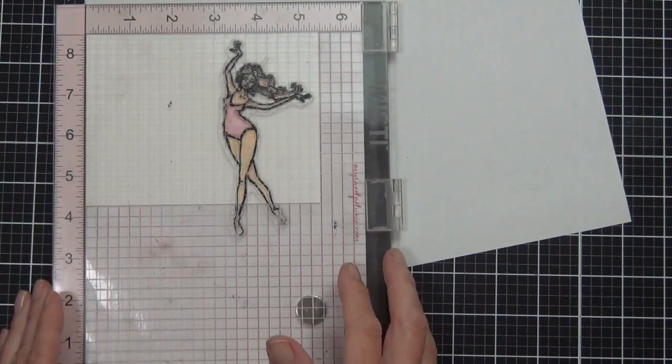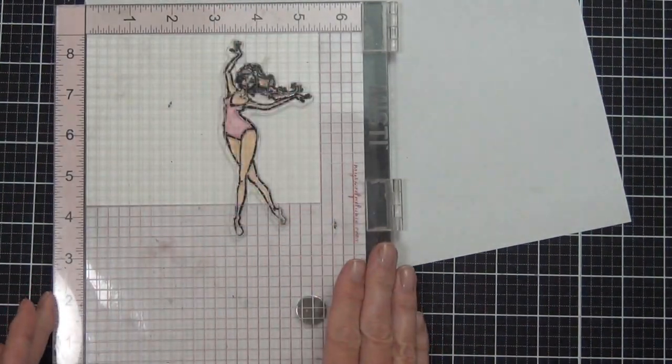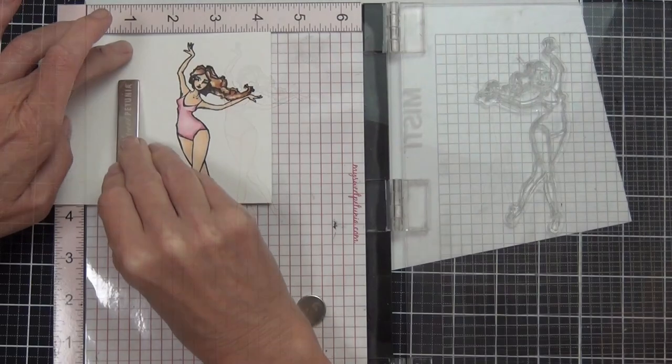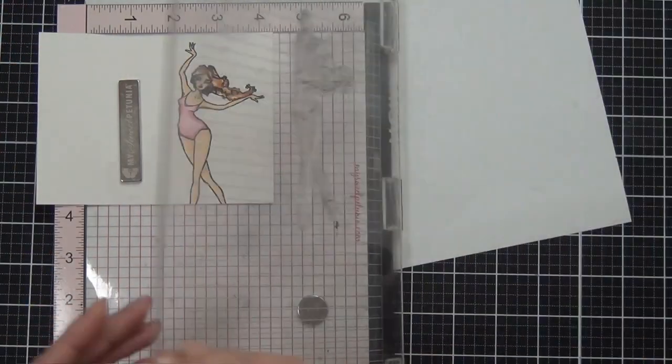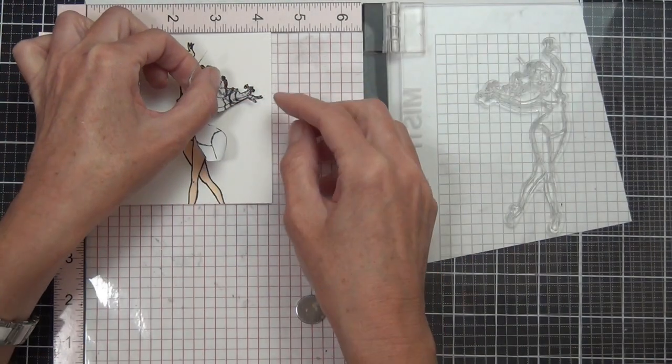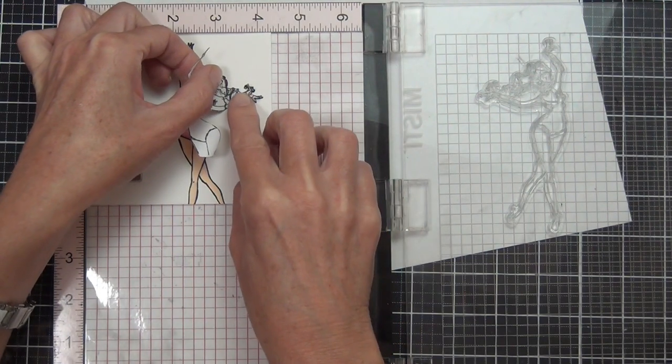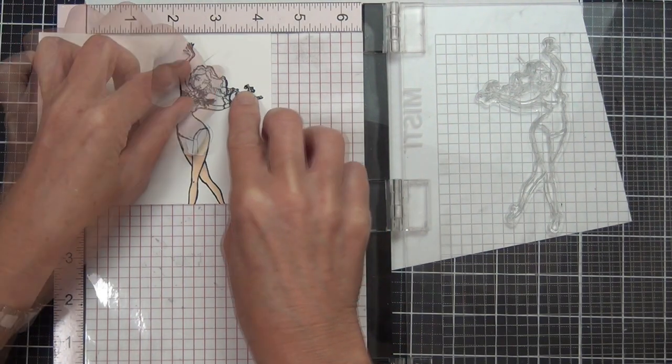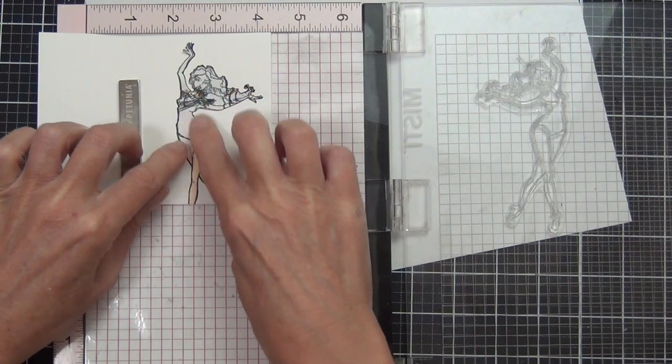Now what I'm doing is re-stamping her and I'm using just pigment black ink to do that, and that just makes those outlines really pop.